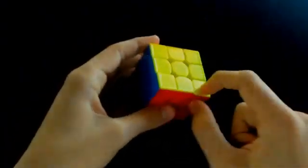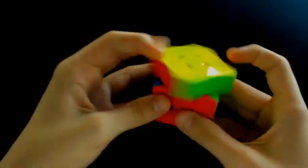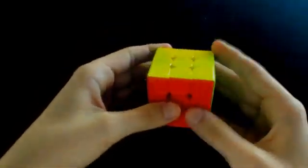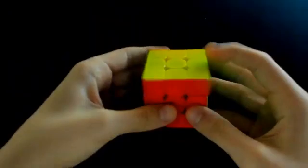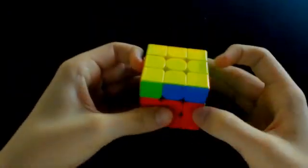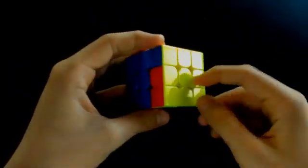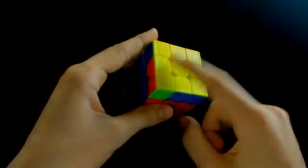Next one would be UFR-UFL. So instead of doing UFD J-perm, which people do normally, or like some people do this thing, I just do U-prime, normal J-perm, and then it cancels with the last AUF. So this is just UF-UL swap.